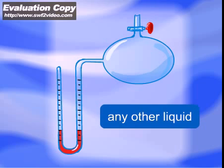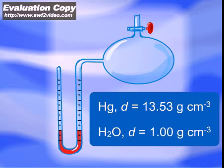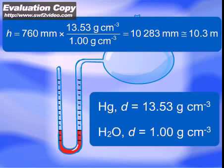Any other liquid can be used in a manometer. However, the height of the manometer depends on the density of the manometric liquid. Water is more than 13 times less dense than mercury. Therefore, the water-filled manometer would need a height of about 10 meters. The use of such a manometer would be rather awkward.